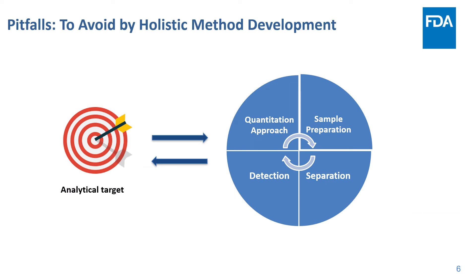Analytical methods for nitrosamine analysis can be susceptible to many pitfalls, as they are designed to detect and quantitate very low levels of analytes in a relatively complex matrix. These obstacles can arise in the development and performance of methods, thereby leading to inaccurate measurements and unfounded decisions. Having a good understanding of sample preparation, separation, detection, and quantitation, and knowing how these aspects affect each other, is critical to develop a suitable and robust method.